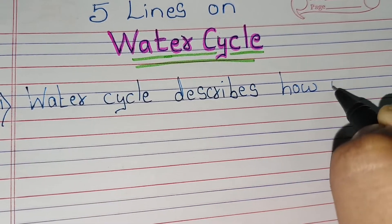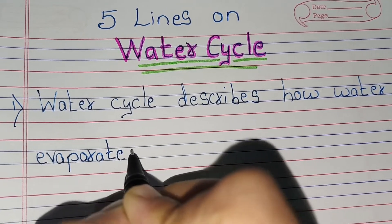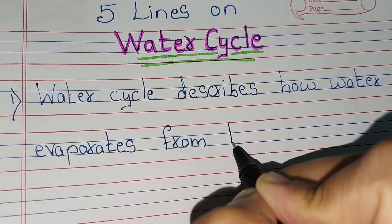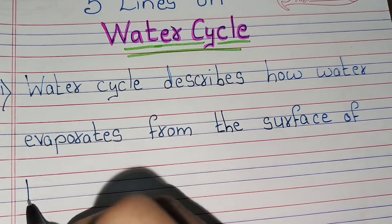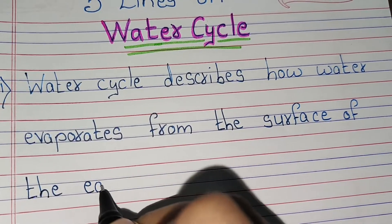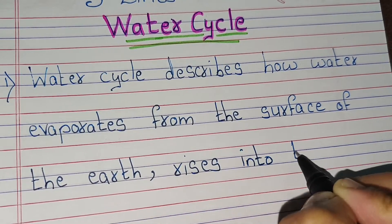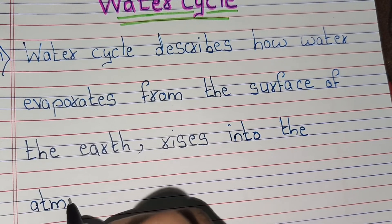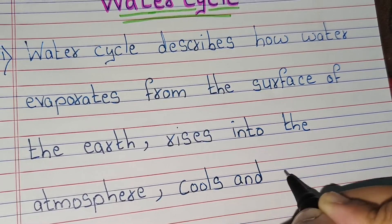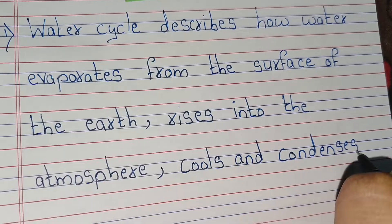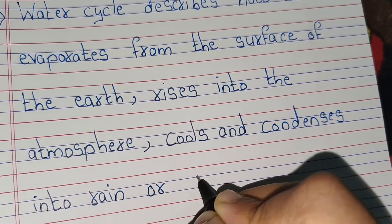Water cycle describes how water evaporates from the surface of the earth, rises into the atmosphere, cools and condenses into rain or snow in clouds.